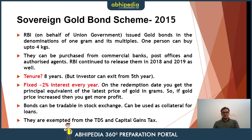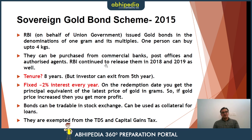The next scheme is the Sovereign Gold Bond Scheme, which came in 2015. RBI, on behalf of the union government, issued gold bonds in denominations of 1 gram and its multiples, in which an individual can buy up to 4 kg. These can be purchased from commercial banks, post offices, or authorized agents. The releases were continued in 2018, 2019, and 2020. The gold bond is for 8 years.